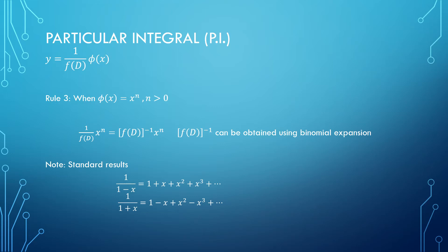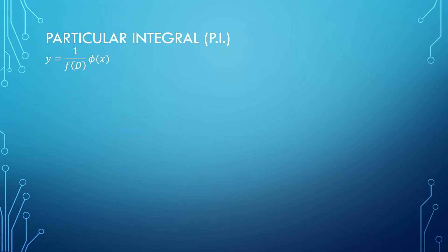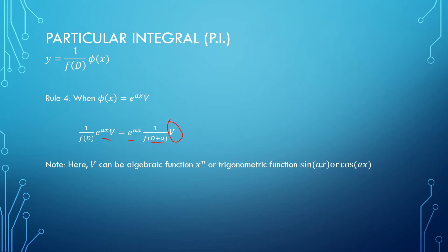The next rule is when I have a combination of e to the power ax with any other expression. This v can be any function—algebraic, sine, or cosine. In this rule, I take out e to the power ax and replace d by d plus a. Then operate it over v according to the rule.